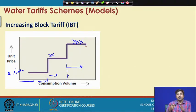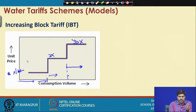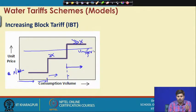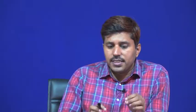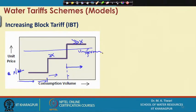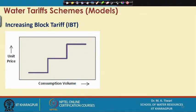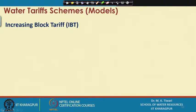The uniform pricing model is also based on consumption, but in uniform pricing the rate per unit water consumed is fixed. In the increasing block tariff, the rate per unit water consumed actually changes — that is the basic idea of the IBT model.